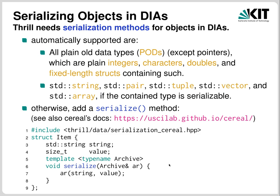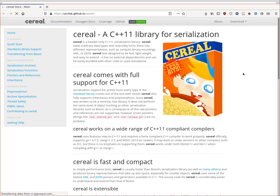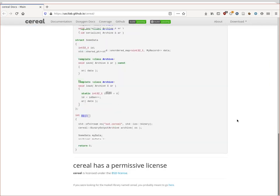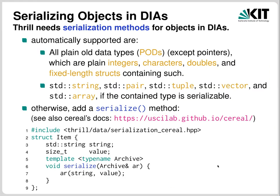If you run into problems with a class not being serializable, you can add a serialize method. For more complex classes containing variable-length strings, we use the Cereal framework — that's Cereal as in your morning breakfast. See the Cereal website for more information. You have a serialize method which takes a template archive and puts or restores all items of the struct to or from the archive. That's it — and then this item becomes serializable.